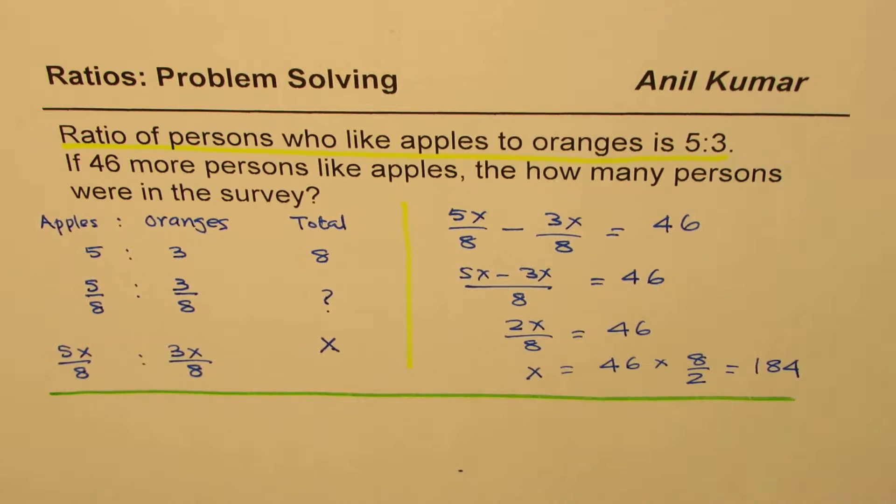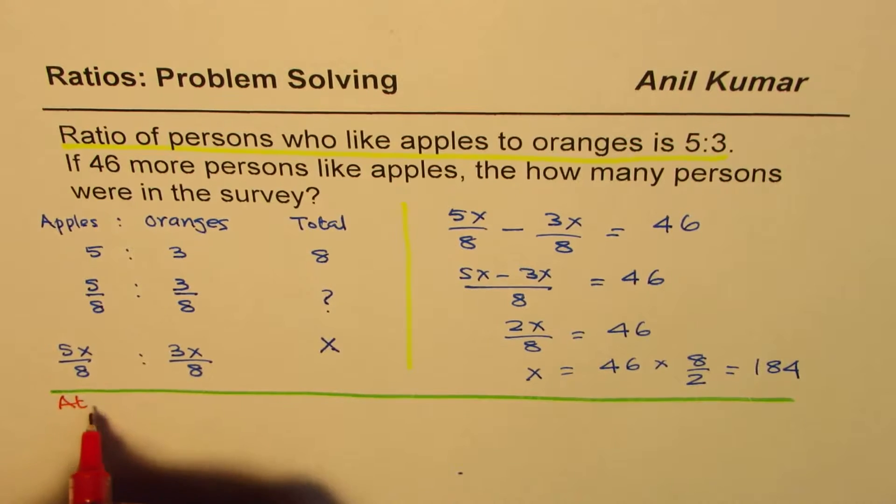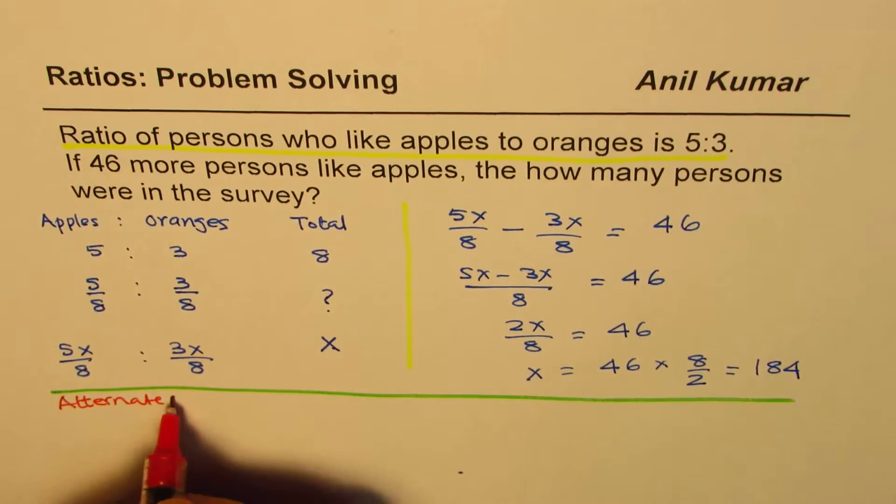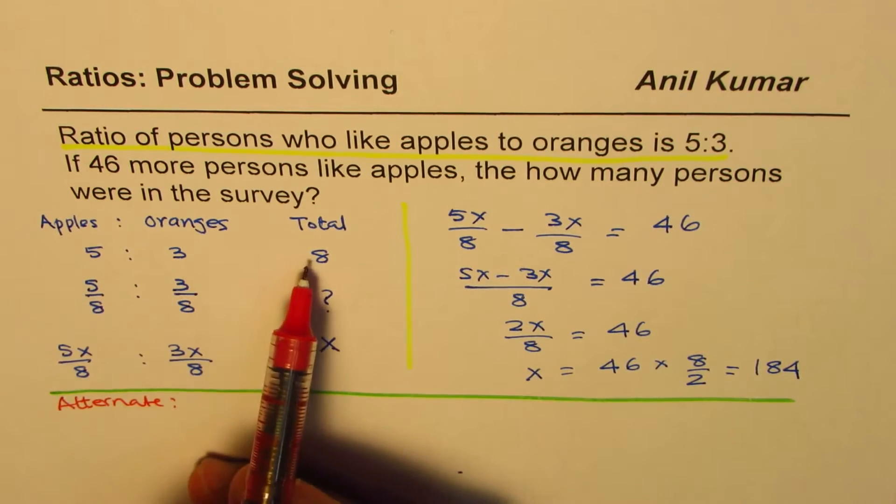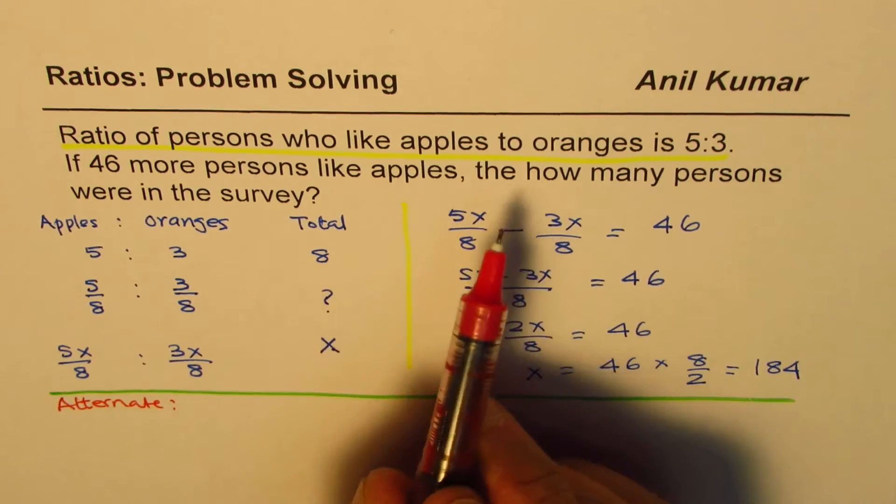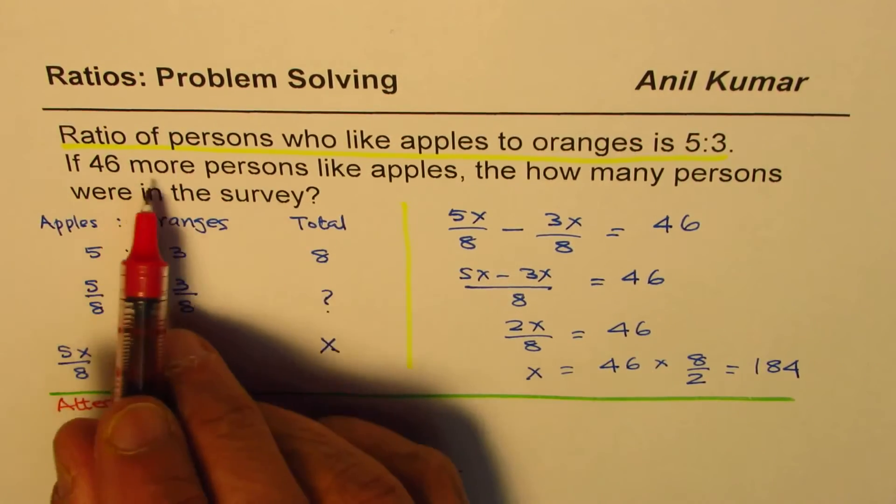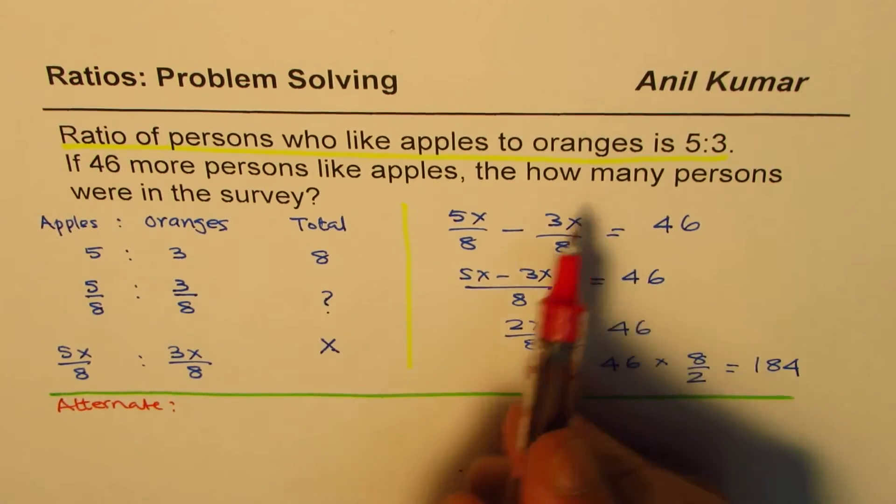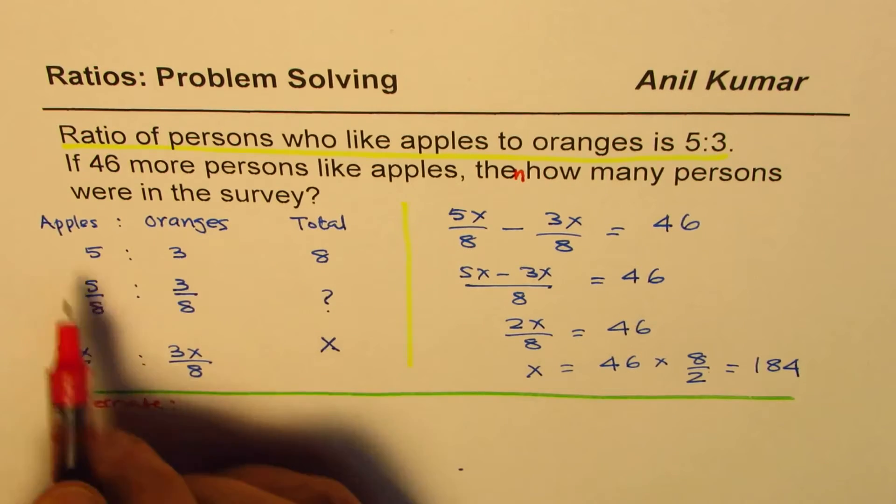Now here is an alternate way of doing it. Let's talk about the alternate method. Now if you see here, we are seeing 2 out of 8, how many like apples more? So the question is, if 46 more people like apples, then how many persons were in the survey.